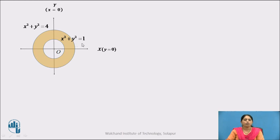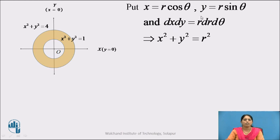Here, x² + y² = 1 is a circle with center at the origin and radius 1, which is the inner circle of this diagram. Similarly, x² + y² = 4, which can be written as x² + y² = 2², is a circle with center at the origin and radius 2. The region of integration is the left half of this annular region — this left part is the region of integration. Now, we will put x = R cos θ, y = R sin θ, and dx dy = R dr dθ to convert the given Cartesian example to the polar one. By this substitution, we know that x² + y² = R².